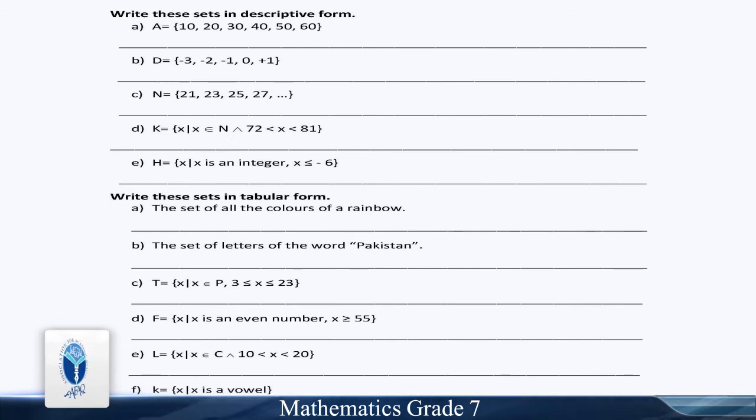T = x whenever x belongs to P and x is greater than or equal to 3 and less than or equal to 23. Part D: F = x whenever x belongs to even number and is greater than or equal to 5. Part E: L equals x whenever x belongs to C and x is greater than 10 and less than 20. Part F: K = x whenever x is a vowel.